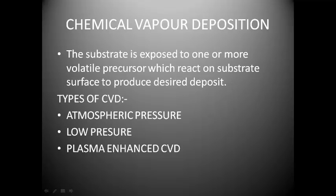Chemical vapor deposition process is actually nothing but the substrate is exposed to one or more volatile precursors which react on the substrate surface to produce the desired deposit. That means this whole process is done on the surface of the workpiece with very slight, negligible thickness.